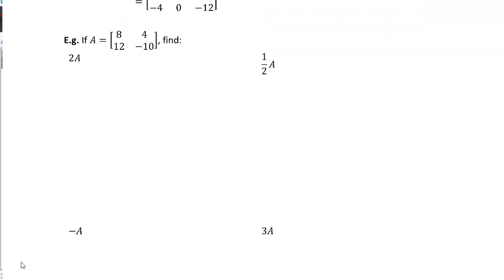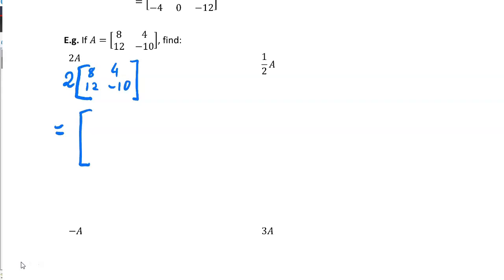So I've got A being equal to the matrix with elements eight, four, twelve, negative ten — that's a two by two matrix. Two times that matrix: two times eight is sixteen, two times four is eight, two times twelve is twenty-four, and two times negative ten is negative twenty.